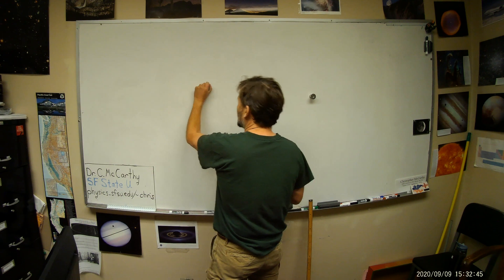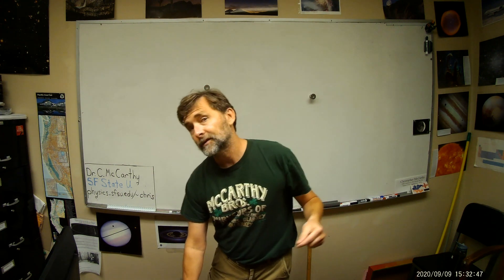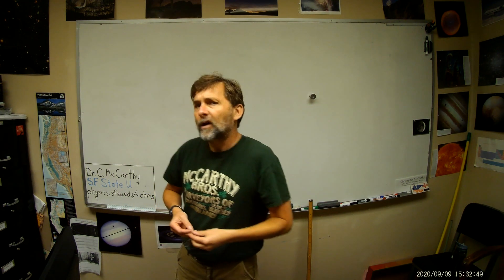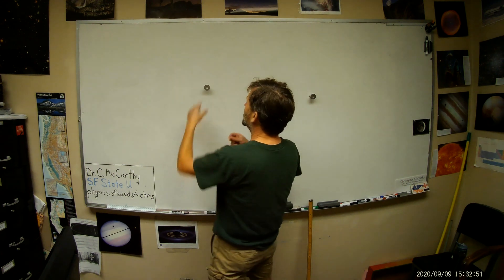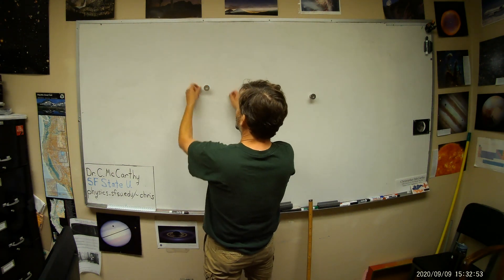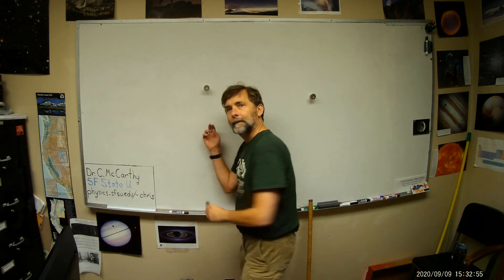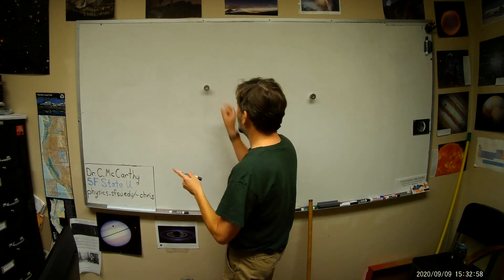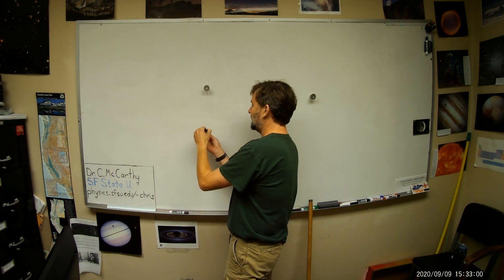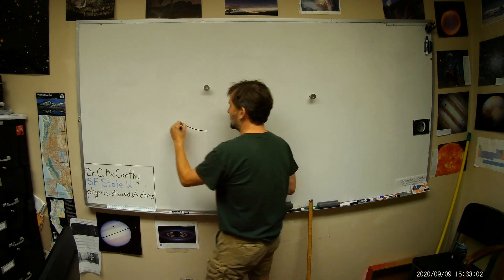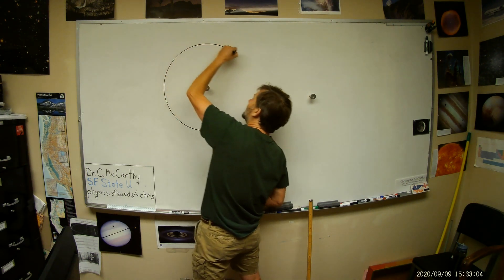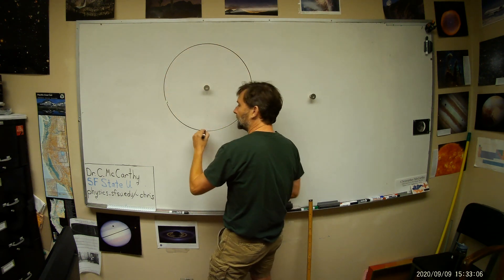It's just all the points that are a certain distance from the center. They're all the same distance, so you can pick a center, and then if you have a string, it's easy to draw a circle. There's one center point, and you just stretch out the string and draw the circle.